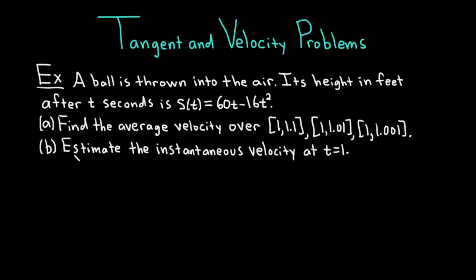In part B, we have to estimate the instantaneous velocity at t = 1. The idea here is that as the interval gets smaller, our average velocity will get closer to the instantaneous velocity. But based on part A, we should be able to guess and get an answer for part B.